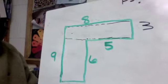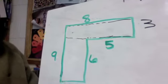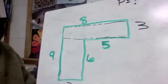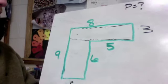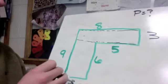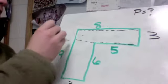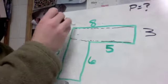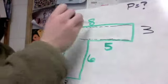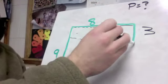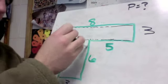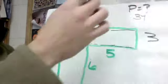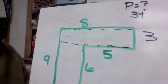Now all we have to do is add up all our numbers to find the distance around the outside of this shape. 3 and 9 would make 12, and 12 and 8 would make 20, then 23, and 23 and 5 would be 28, and going down here would be 34. So we have a total perimeter of 34.